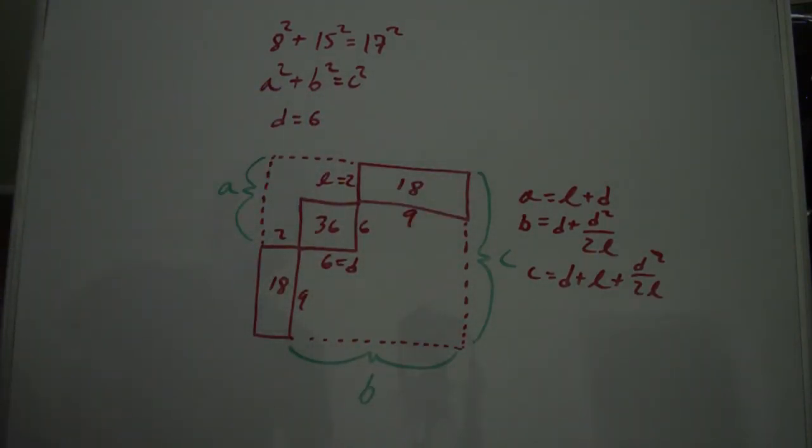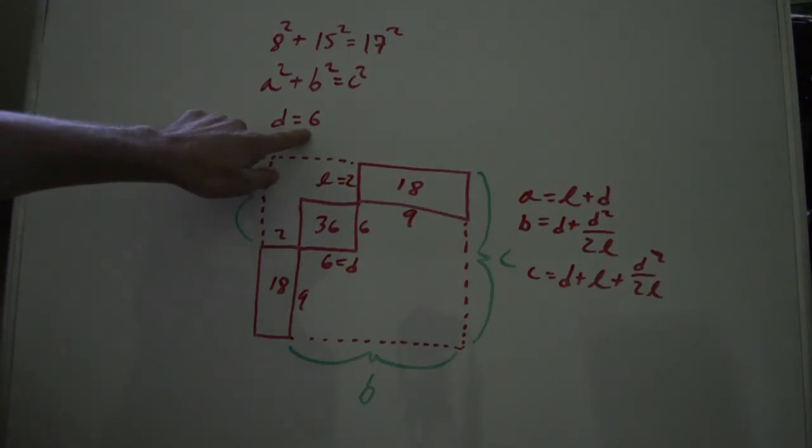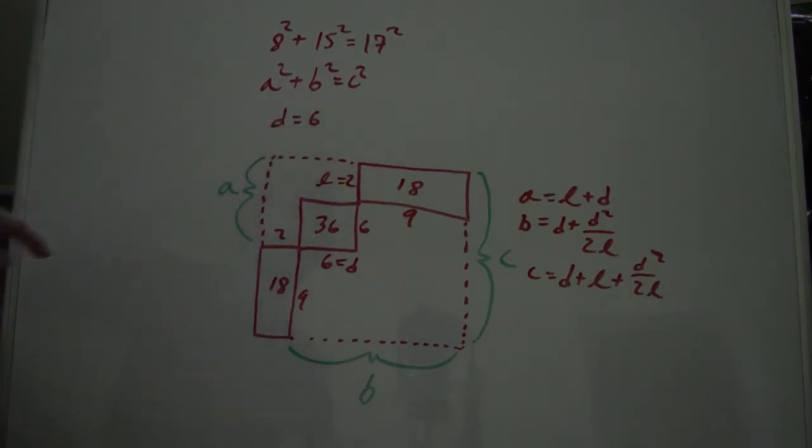And now if you just pick any arbitrary number d, and then you pick a number that divides d squared divided by 2 evenly, you can generate all Pythagorean triples.